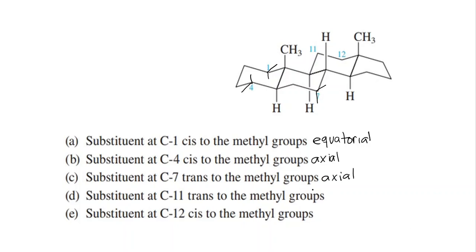Part d: substituent at C11, trans to the methyl groups. At C11, down is equatorial and up is axial. Trans means down, so it is equatorial.